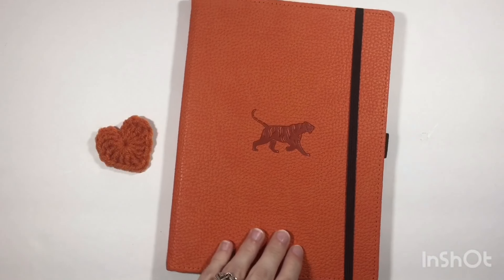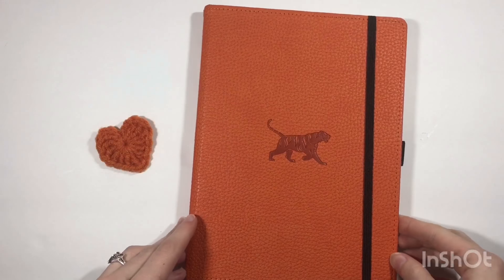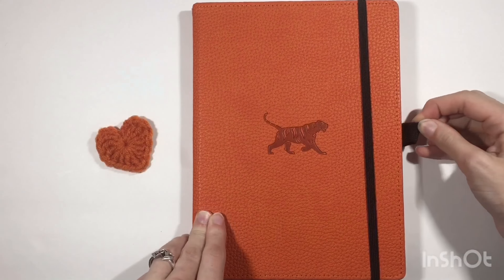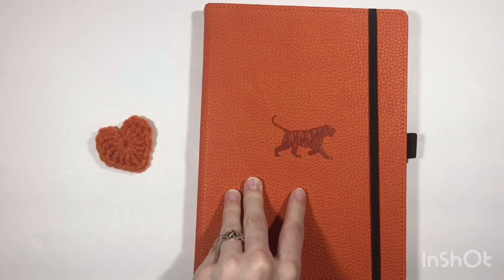Okay, so now that I have the plastic off, this journal is $20 from Amazon. It comes with a pen loop that's pretty strong and stretchy.